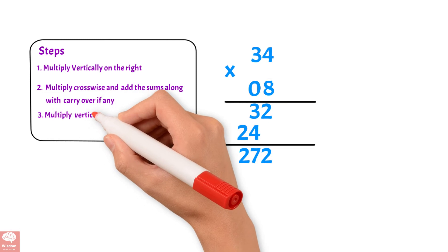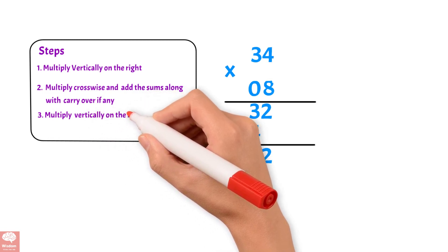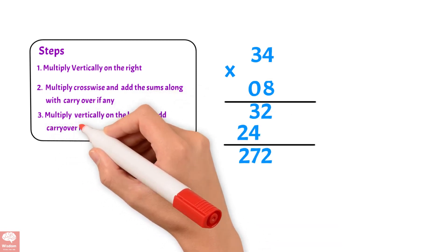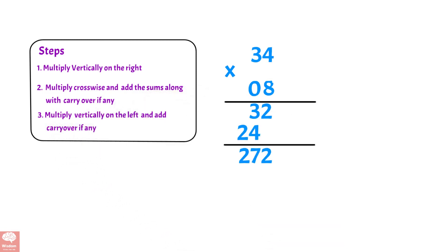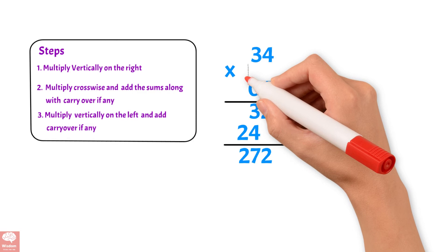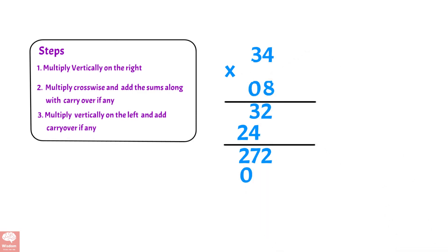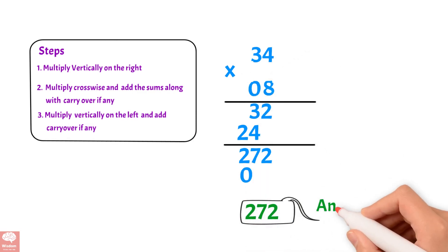Step 3: Multiply vertically on the left and add carryover if any. 3 times 0, we get 0. So 272 is the answer.